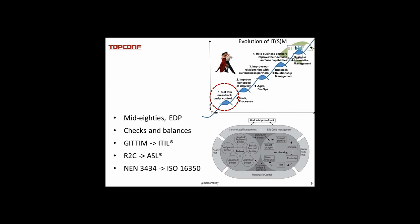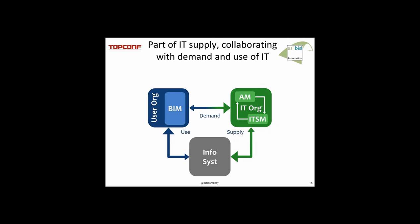By that time, many organisations in the Netherlands were using ASL, and encouraged by this adoption, the Dutch standards organisation NEN launched a national standard for application management — NEN 3434 — strongly based on ASL. Then in 2011, ISO decided to develop an international standard for application management. And now the ISO 16350 standard, published in July, is clearly inspired by ASL, with a pretty much the same structure, even if some process names differ. So now we have an ISO standard describing the outcomes, activities, and tasks of the whole application management domain.